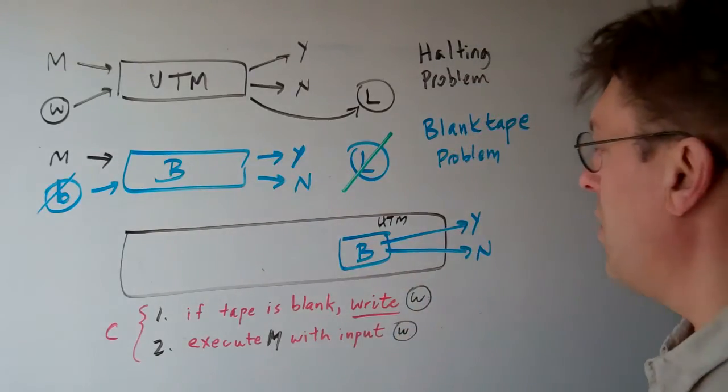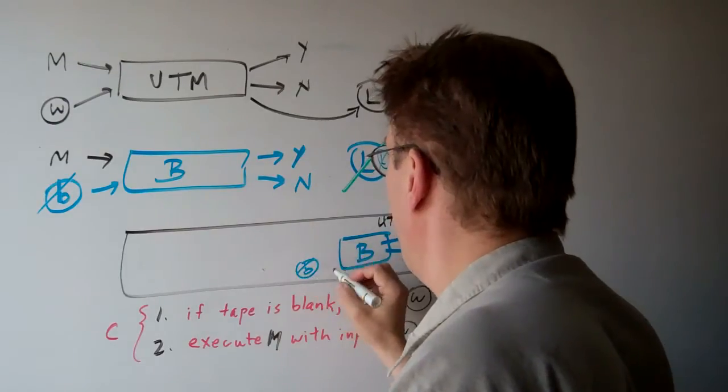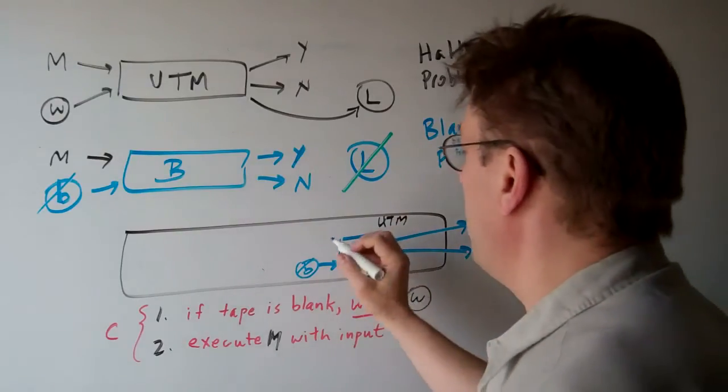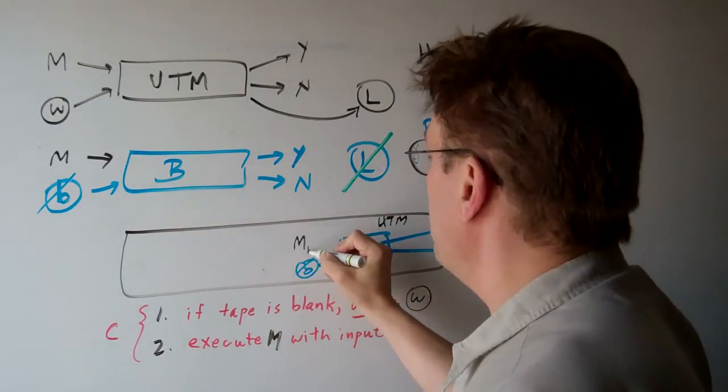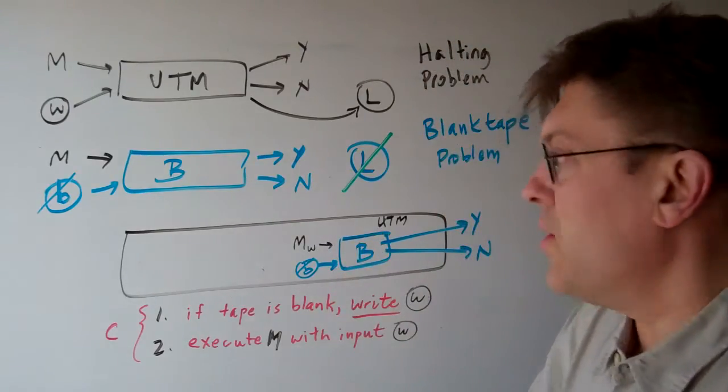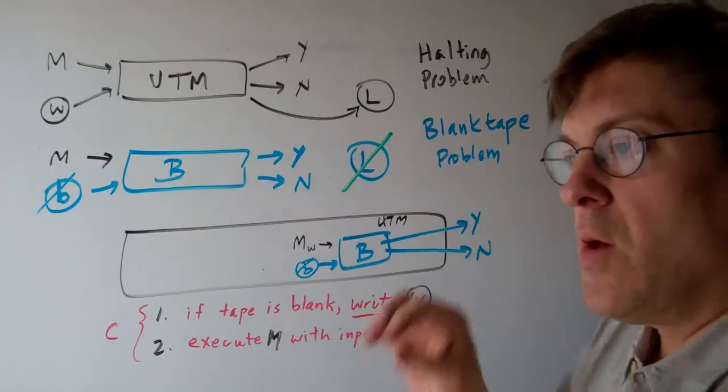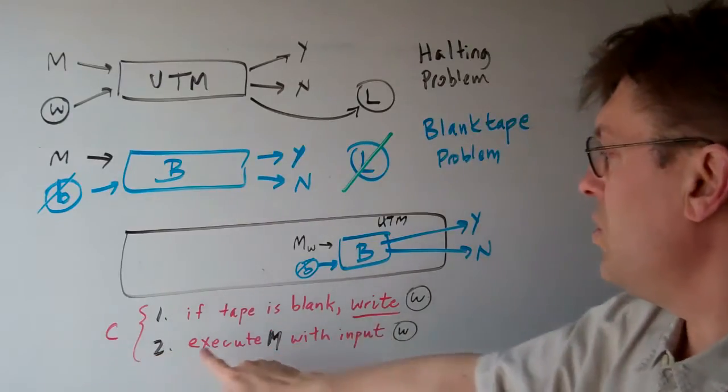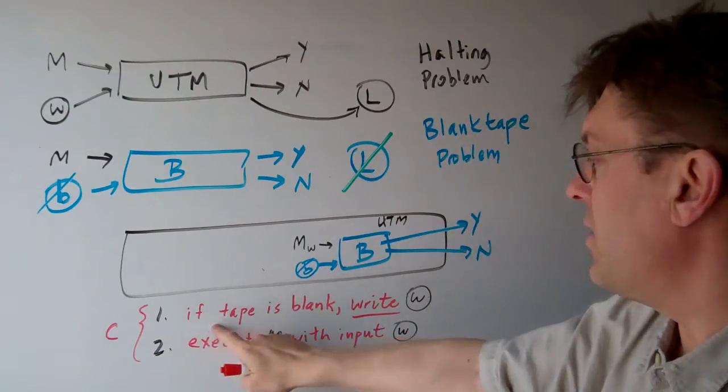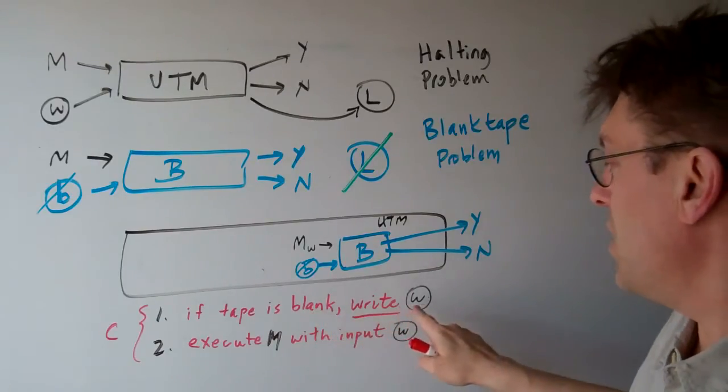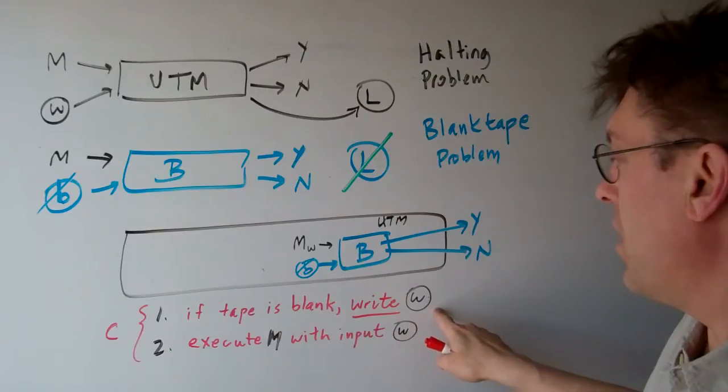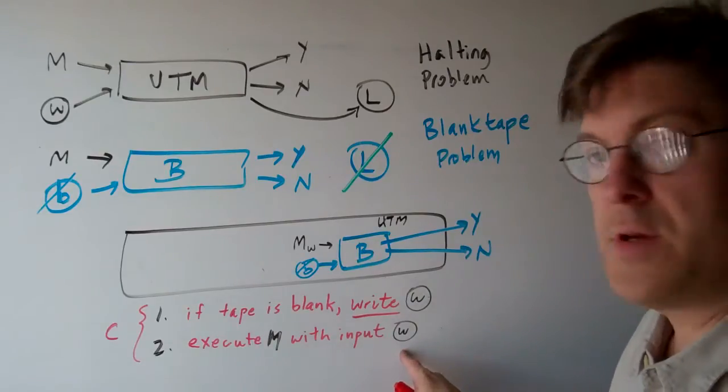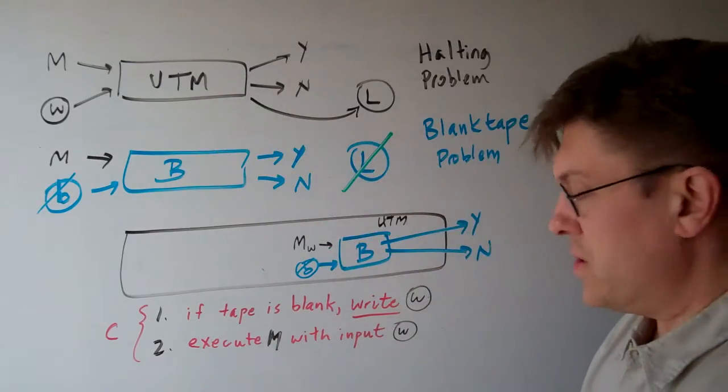That would give us a yes or a no. And basically we could feed this a blank, and then we could feed the machine, the same machine as this machine except with this word written on the tape. So all we would have to create is a new little conversion program C, that says if the tape is blank on some given machine, write a W on it, and then execute M with that input W just as we would here. Okay? So let's try that.